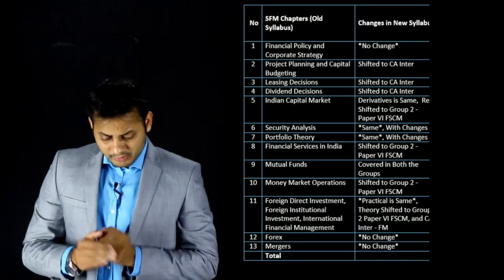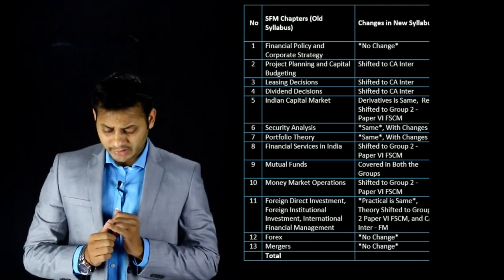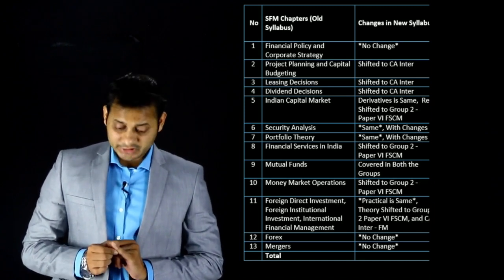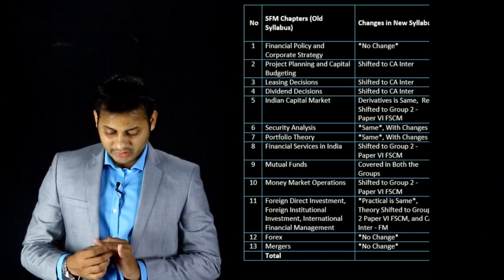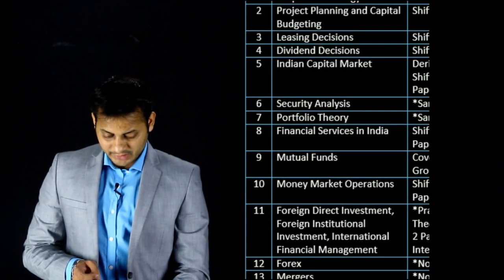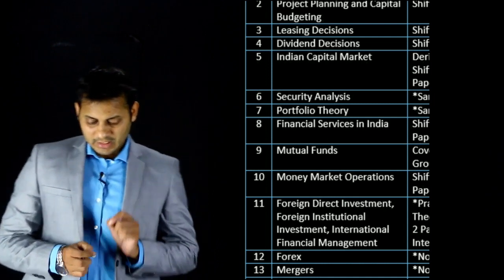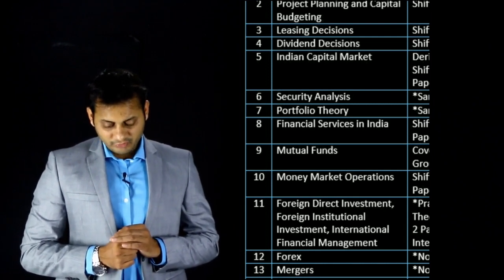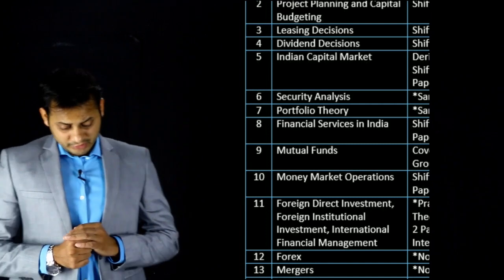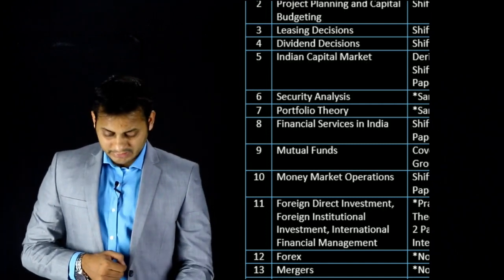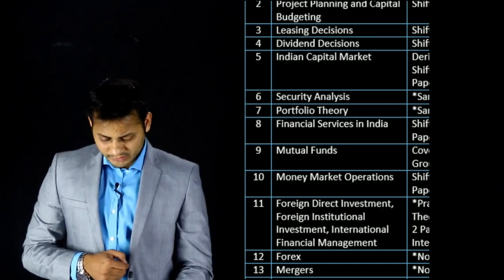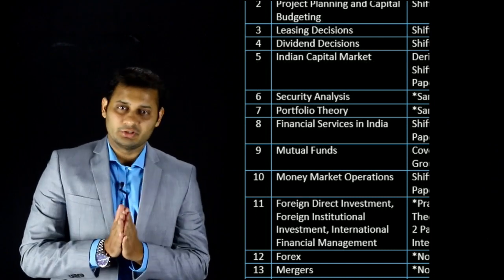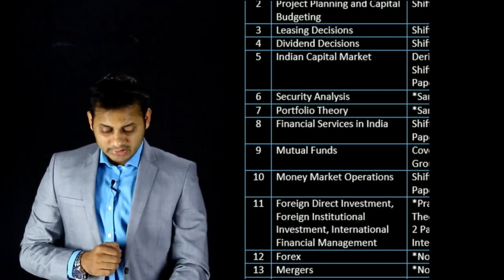Let's go through all the chapter names carefully. Chapter 1: Financial Policy and Corporate Strategy. Chapter 2: Project Planning and Capital Budgeting. Chapter 3: Leasing Decision. Chapter 4: Dividend Decision. Chapter 5: Indian Capital Market. Chapter 6: Security Analysis. Chapter 7: Portfolio Theory. Chapter 8: Financial Services in India. Chapter 9: Mutual Funds. Chapter 10: Money Market Operations. Chapter 11: Foreign Direct Investment, Foreign Institutional Investment, and International Financial Management — all under one chapter. Chapter 12: Foreign Exchange and Risk Management. Chapter 13: Mergers, Acquisition and Restructuring.